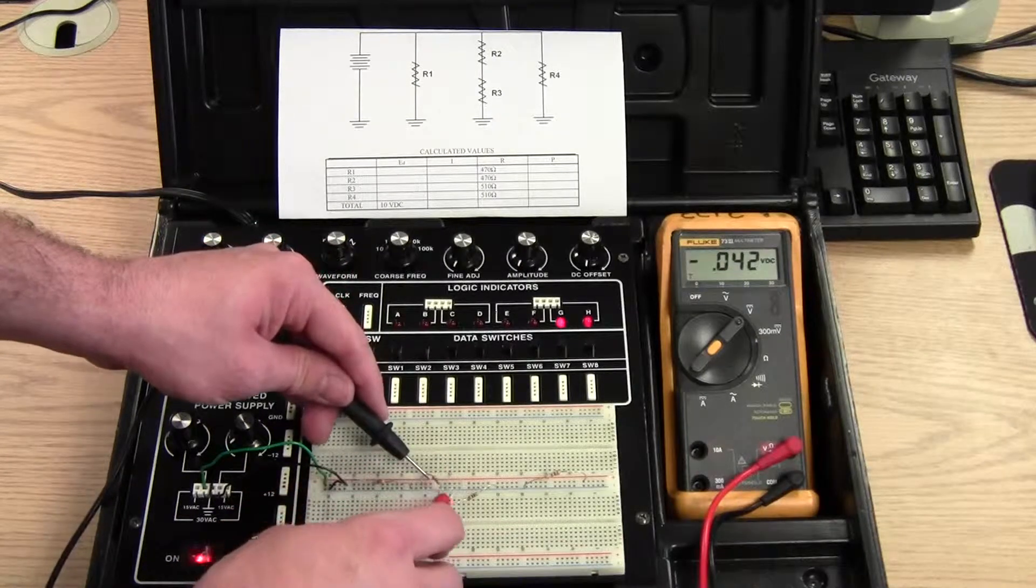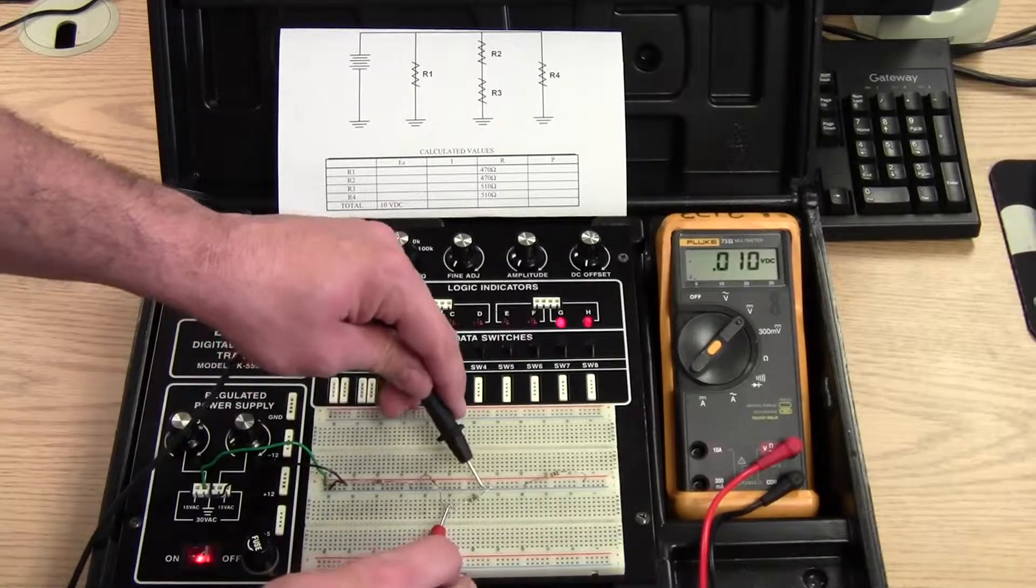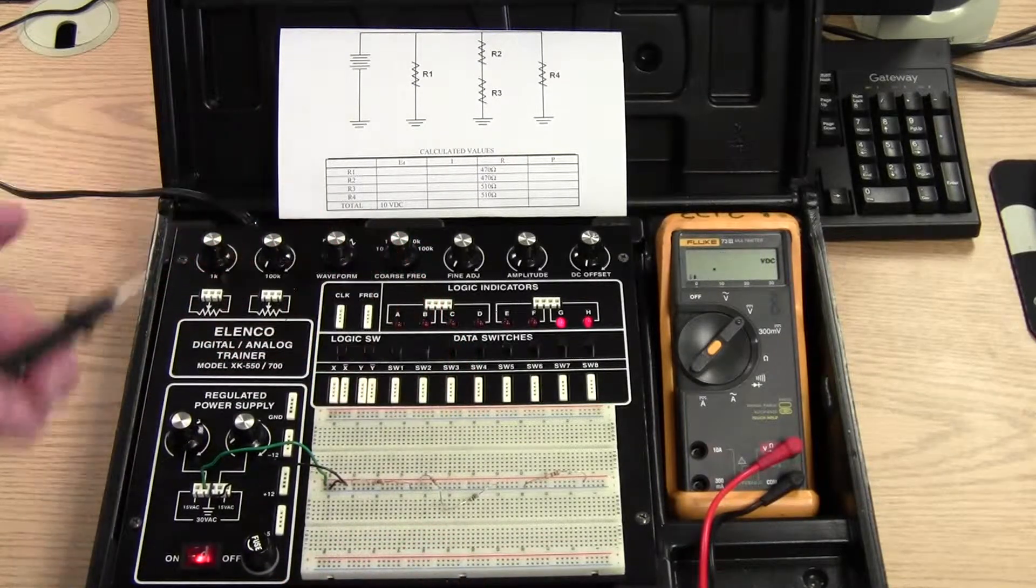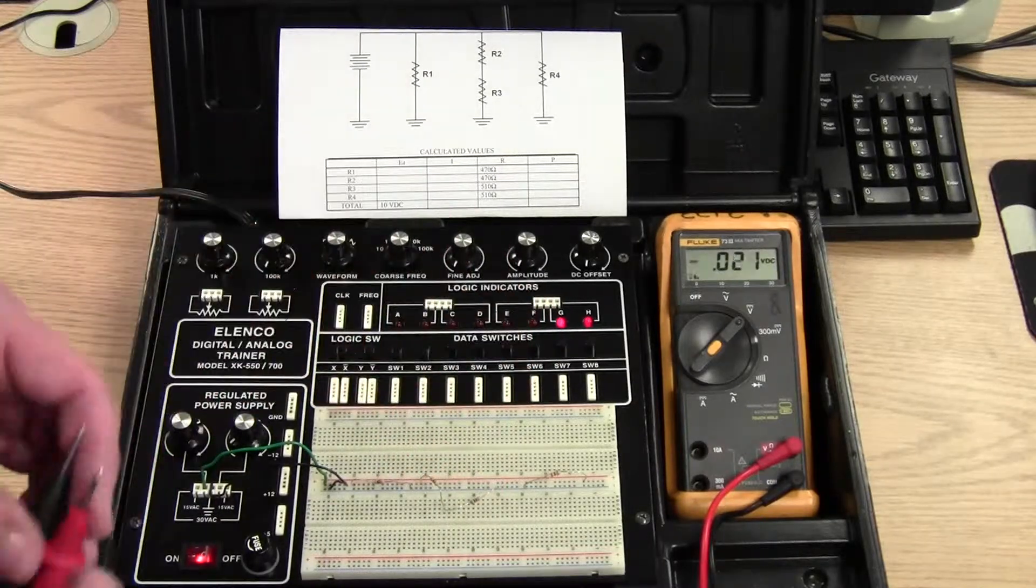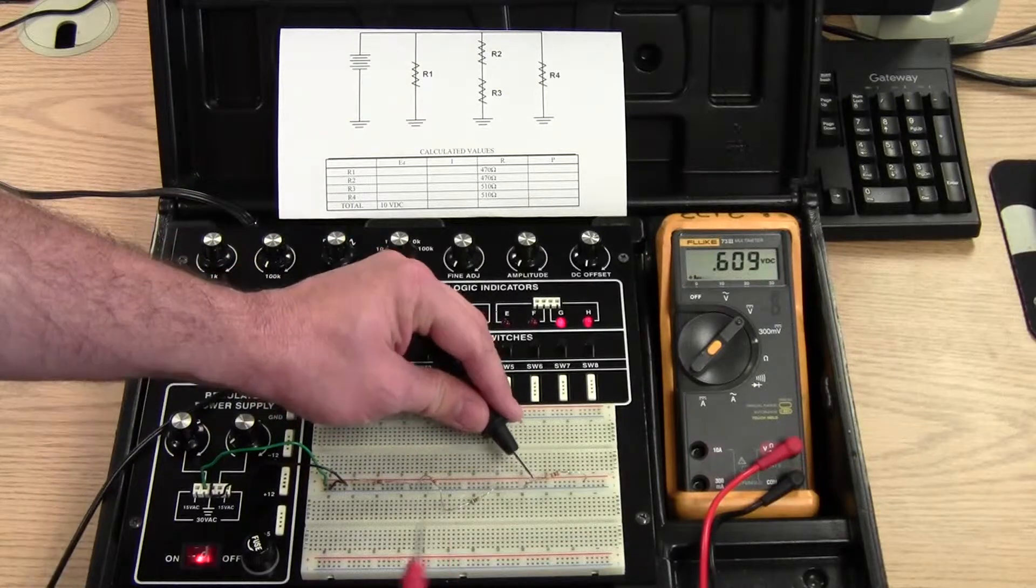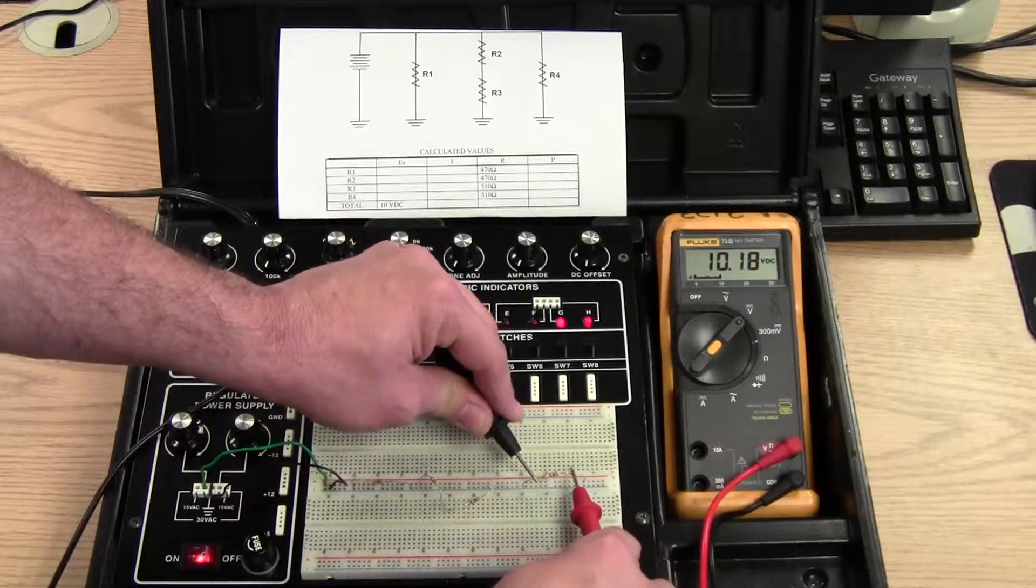Voltage drop of R2 is going to be 4.8. And then voltage drop of R3 is 5.3. Add those up and you roughly get our source voltage of 10 volts. And then finally our last resistor R4 is in parallel, drop source voltage.